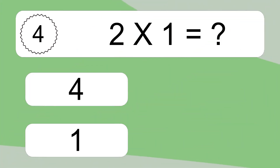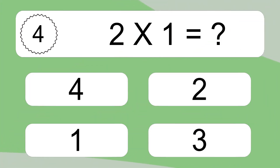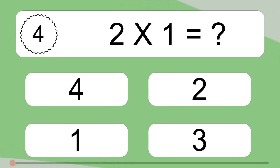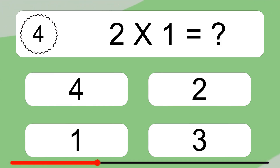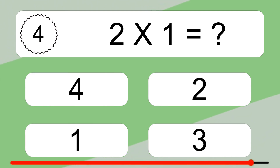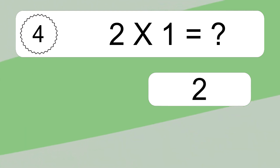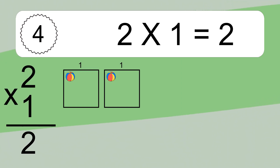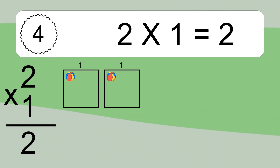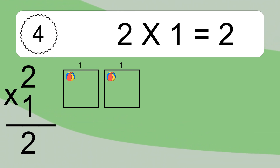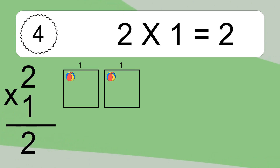2 times 1 equals what? We have 2 boxes, and each box has 1 colorful ball inside. If you count all the balls in all the boxes together, you will have 2 times 1 balls. This equals 2 balls.